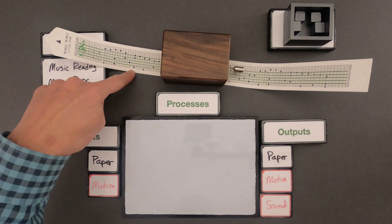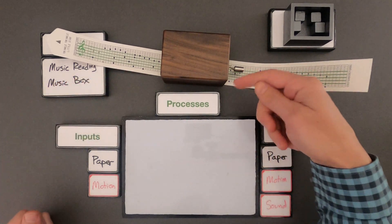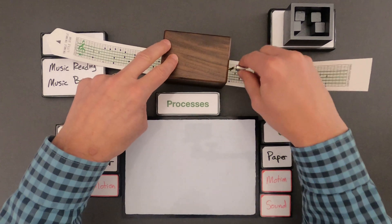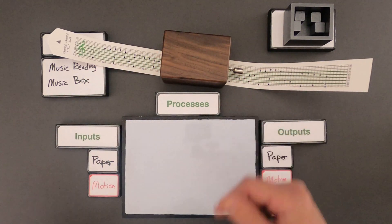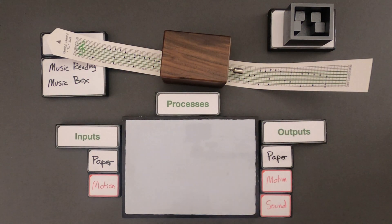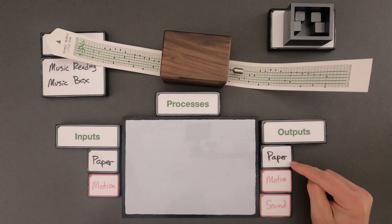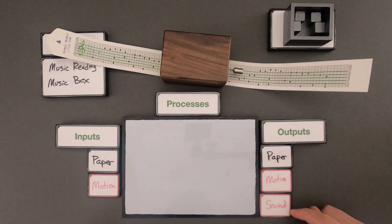So the inputs would be the paper going in and there's also the input of energy. When I spin this crank, I'm adding motion energy into the system. What comes out is going to be the paper. We get motion of the paper out and then we get some sound.